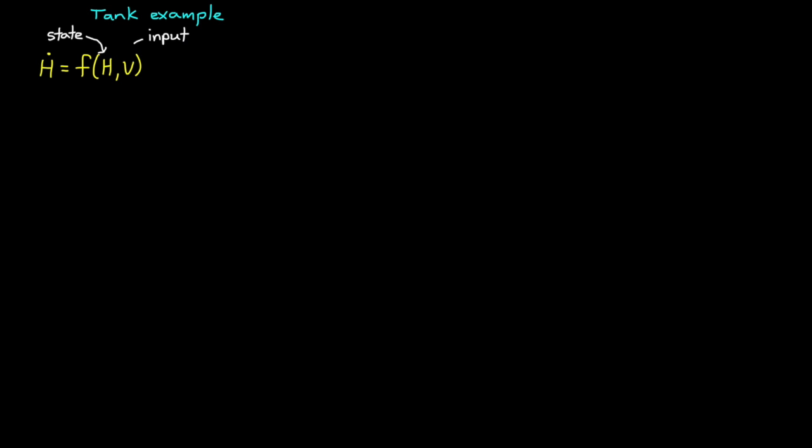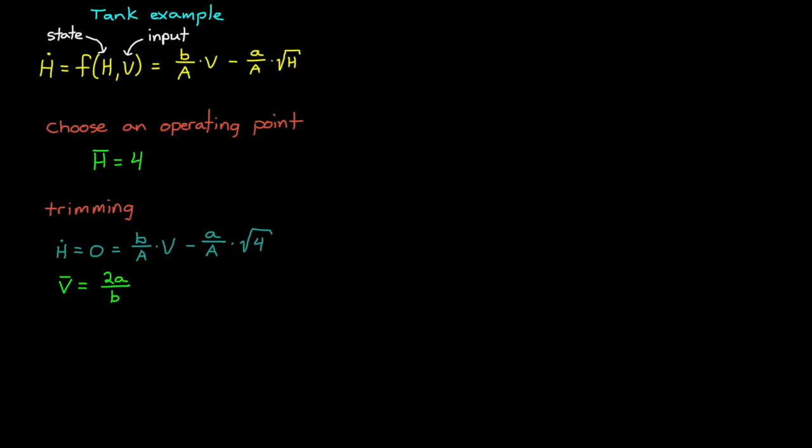Remember, h dot, which is a function of state h and input v, was given as this non-linear equation. So let's linearize it. First we choose an operating point, and I'll stick with h bar equals 4 to make it similar to the last problem. Now we can trim the system so that h dot equals 0 by setting h to the operating point and solving for the input. And we get v bar is 2a over b.